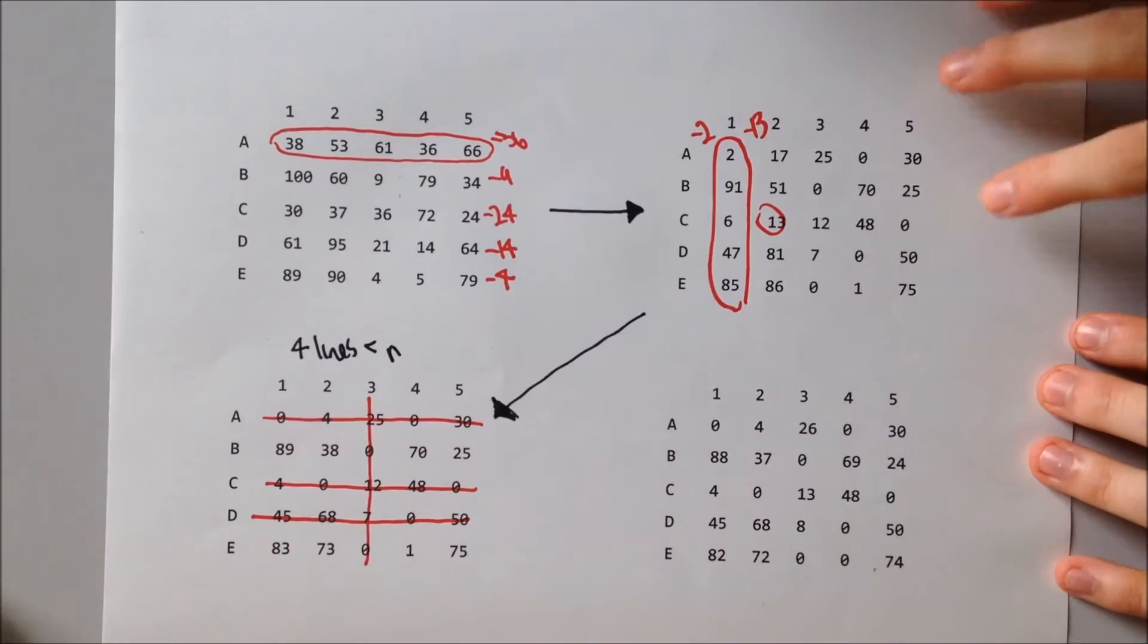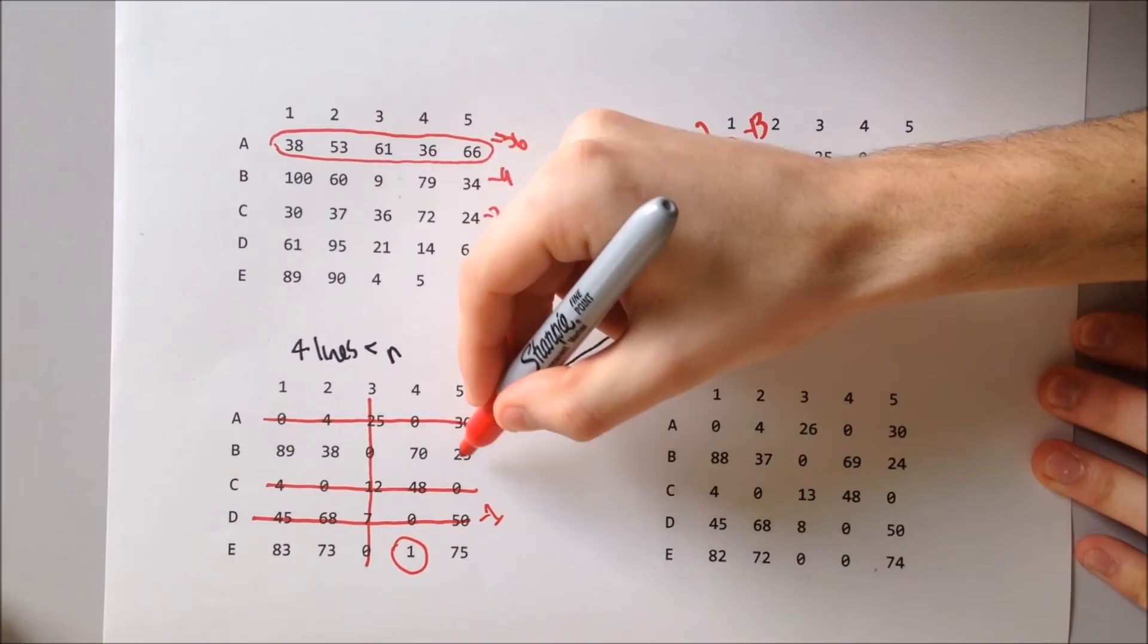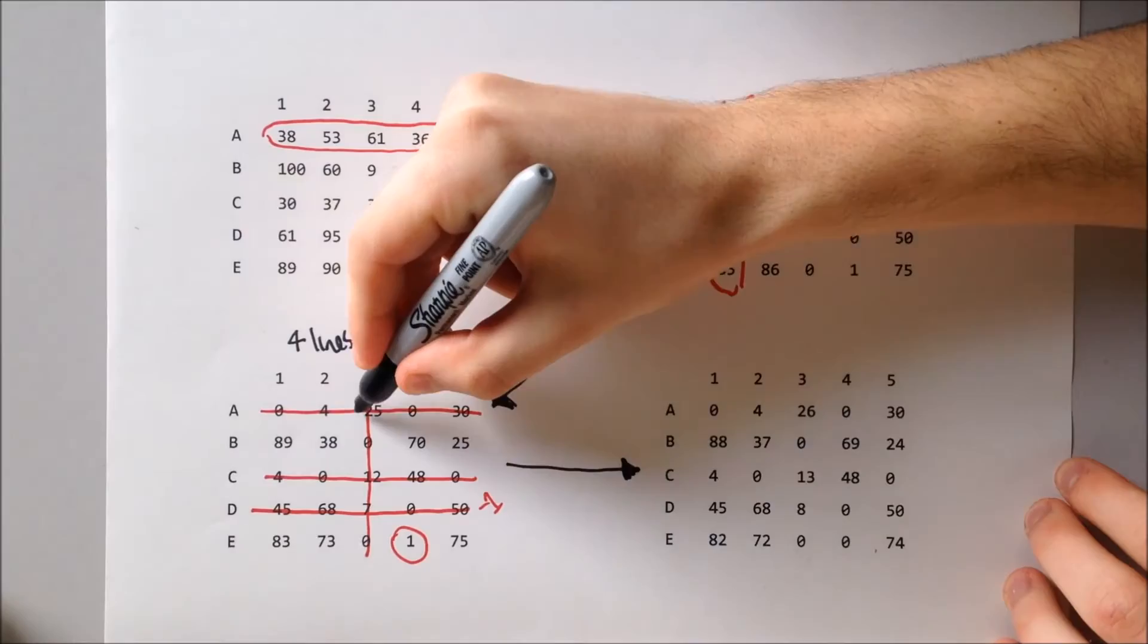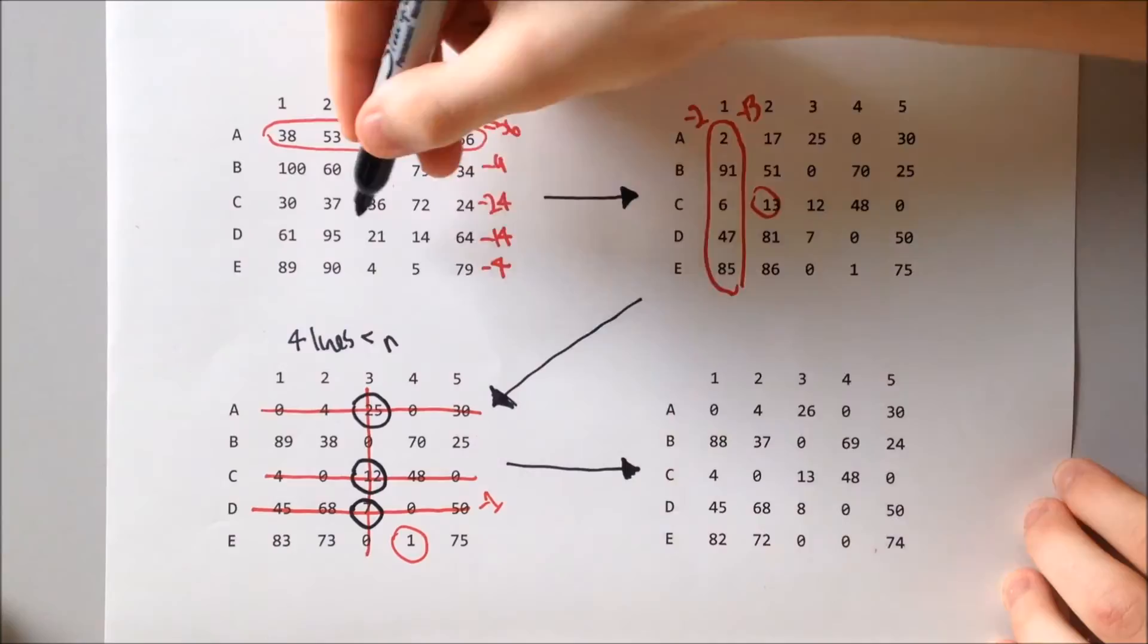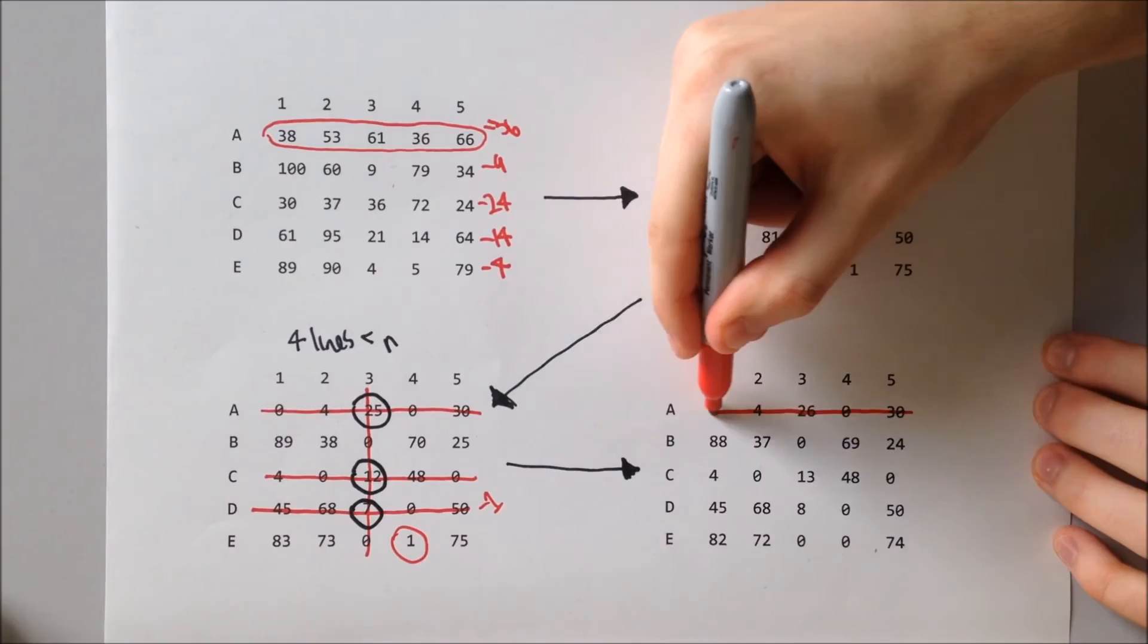As annotated earlier, we see some elements are crossed twice, which means we need to add the smallest element to them. I'm now circling the elements that we need to add one to, because these have been double-crossed. This is now the updated matrix after reduction.